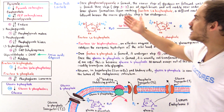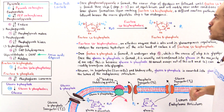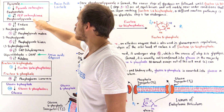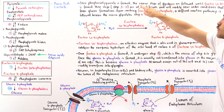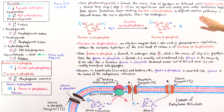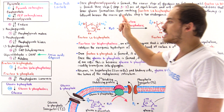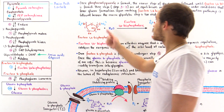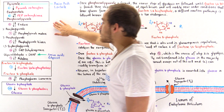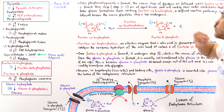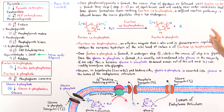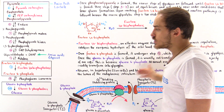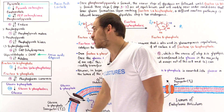Once phosphoenolpyruvate is formed, the reverse steps of glycolysis are followed until fructose 1,6-bisphosphate is formed. Steps three through seven are at equilibrium and will readily occur under conditions that favor glucose formation.